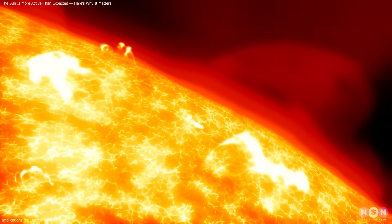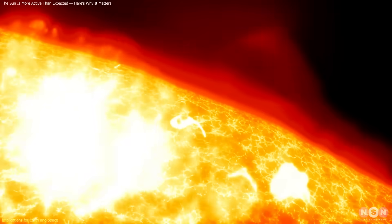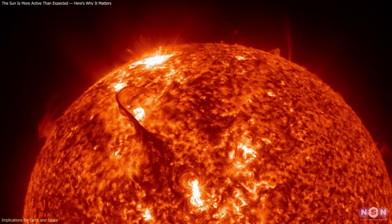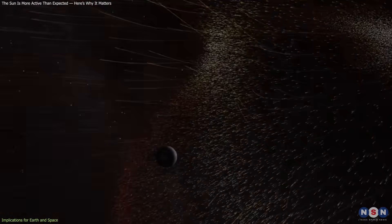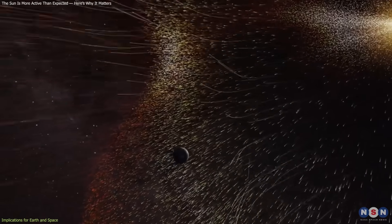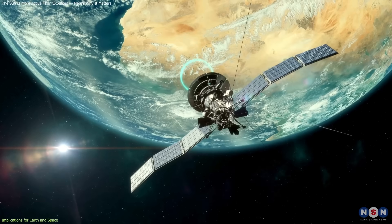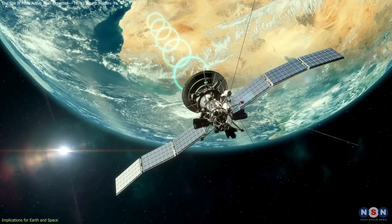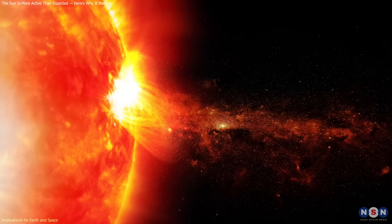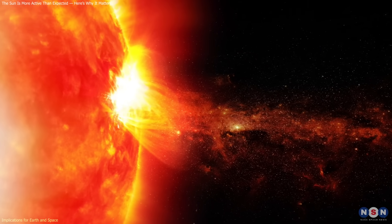A stronger sun carries practical consequences. The most immediate are geomagnetic storms triggered by solar eruptions. When charged particles from it interact with Earth's magnetic field, they can disrupt GPS signals, radio communications, and satellites. Recent storms have demonstrated how quickly these effects can spread worldwide.